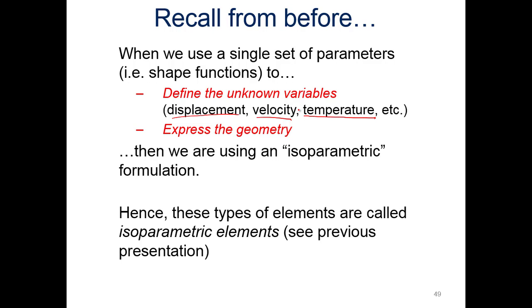If we can use a single set of parameters to express the geometry, then we are using isoparametric formulation. Hence these types of elements are called isoparametric elements. We talked about this before in a previous presentation. Because it can extend to multiple things, it's iso - it's constant for the parameter. So we can use these again and again. That's the big value of shape functions. We can develop them once and use them for multiple different occasions and applications.